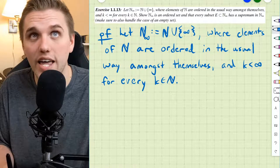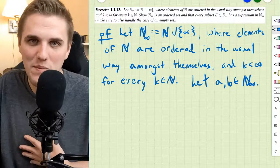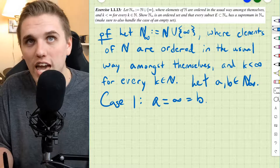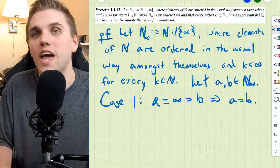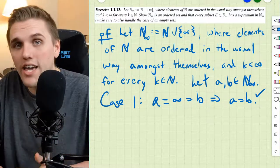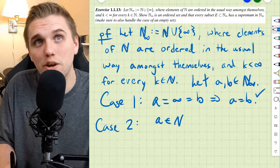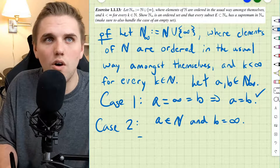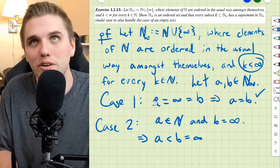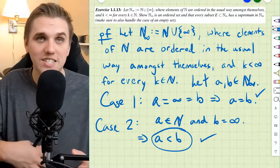We need to show that N-infinity is an ordered set. We pick two elements — there are four cases, but really three. Case one: A equals infinity equals B, they're both infinity. Then A equals B, and we get exactly one of the three comparisons. Case two: A is a natural number and B is infinity. Then A is less than B, since infinity is greater than every natural number, and we get exactly one result.